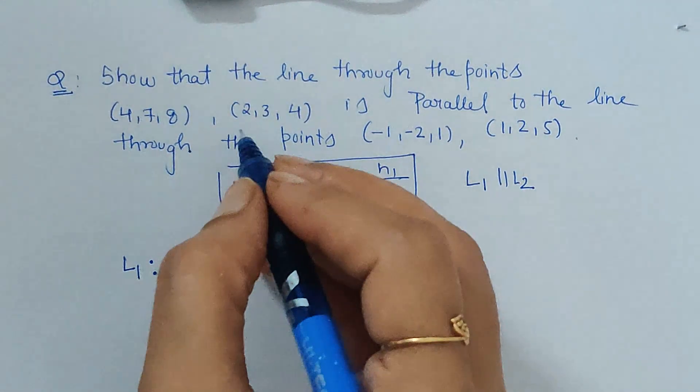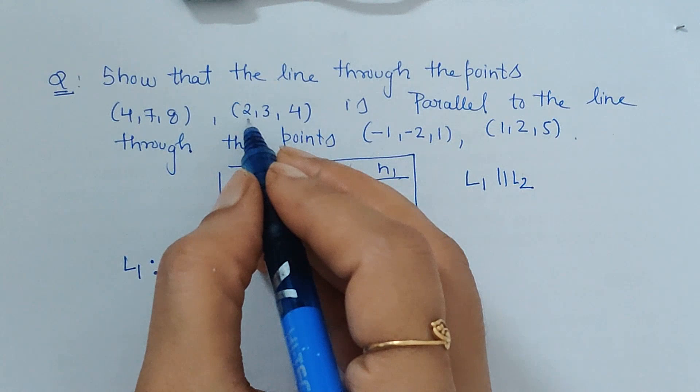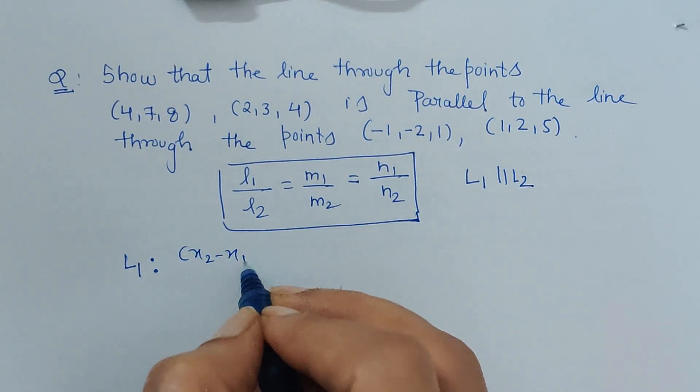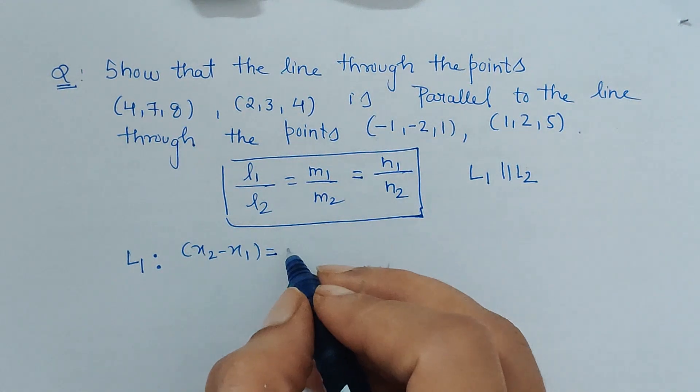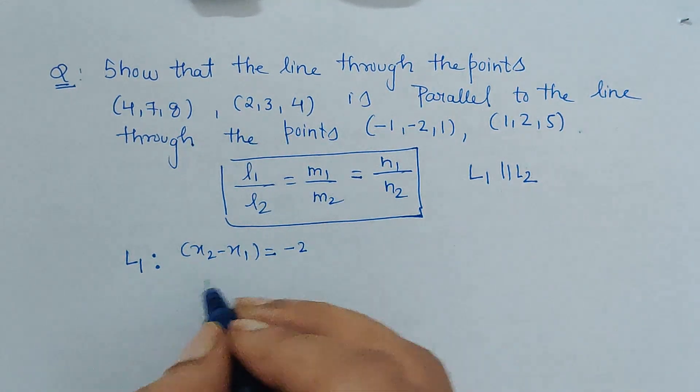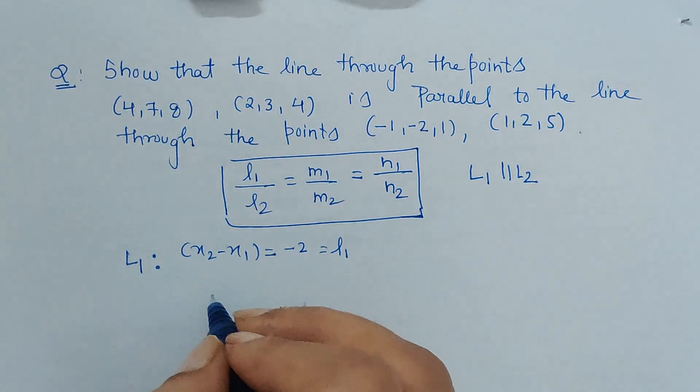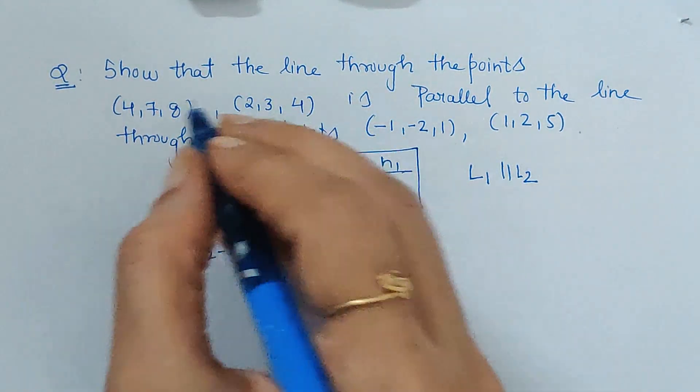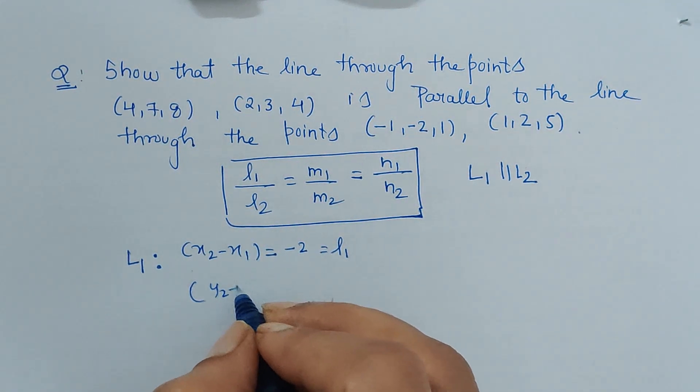Let's find out the direction ratio of the first line. The same process: x2 minus x1, which is equal to 2 minus 4 is minus 2. This is my l1. Similarly, I can find y2 minus y1, which is 3 minus 7 is minus 4.